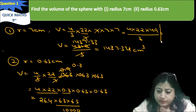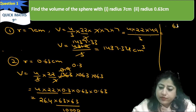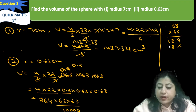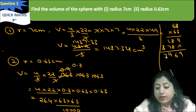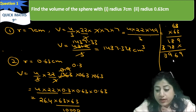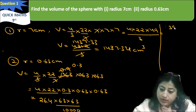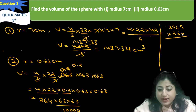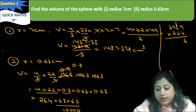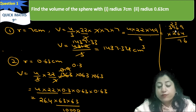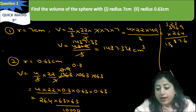We calculate 63 multiplied by 63, which gives 3969. Then multiplying through with 264 and accounting for decimal places, we work through the arithmetic step by step.